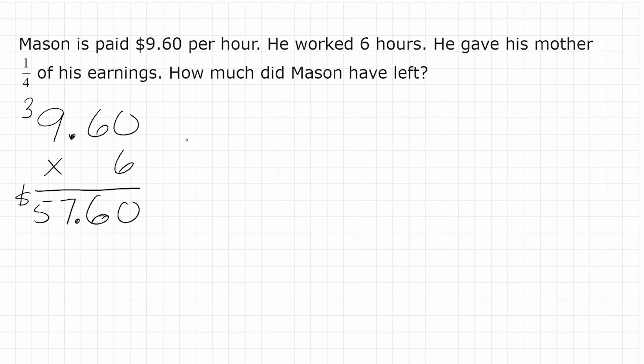All right, now this amount right here is the total amount of money that Mason earned over six hours. So the entirety of the pie is $57.60. Now what I'm going to do is take this pie and break it into quarters.